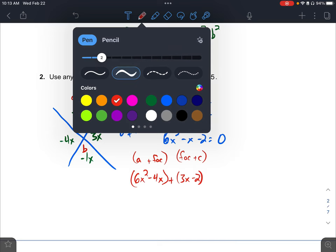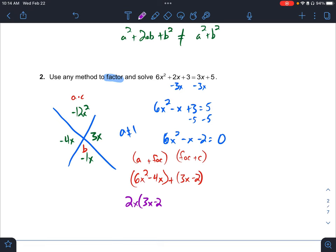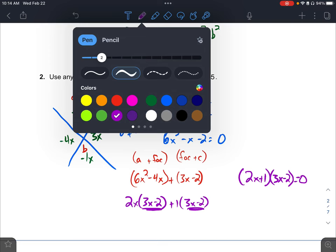What can I pull out? So I can pull out a 2x. It leaves me 3x minus 2. That is what I have, so I'm just going to pull out a 1, 3x minus 2. I want these two to be the same. So my factored answer, 2x plus 1, 3x minus 2, equals 0.